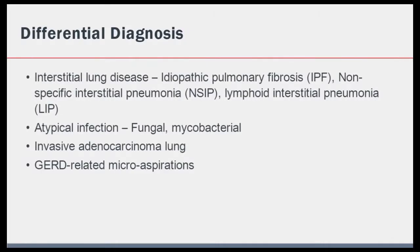Based on this constellation of symptoms and HRCT features, the initial differential diagnosis could include diseases such as common interstitial lung diseases, atypical mycobacterial or fungal infections, invasive adenocarcinoma of the lung, or chronic microaspiration secondary to gastroesophageal reflux disease. Let's work our way through some of these common diseases and try to reach the correct diagnosis.